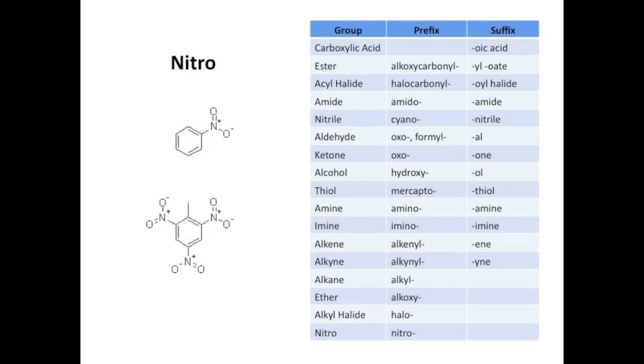And lastly, we have nitro groups, which you see on aromatic rings and are named just as easily as alkyl halides. You place the prefix nitro- before the parent hydrocarbon. So number 1 is nitrobenzene. And number 2 is TNT, or 2,4,6-trinitrotoluene under IUPAC.